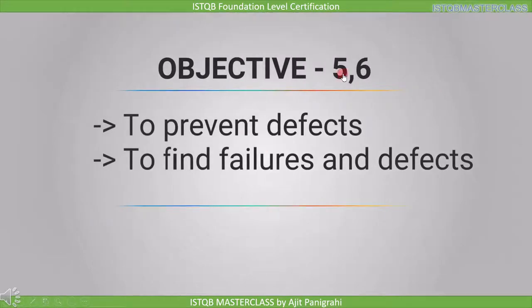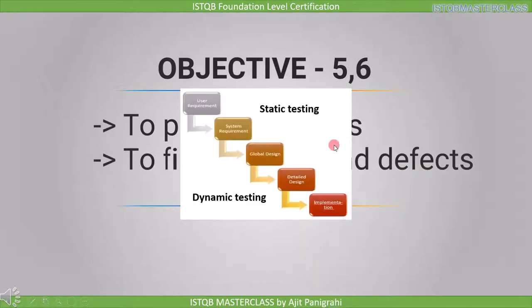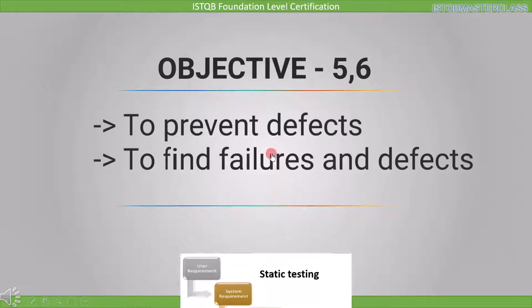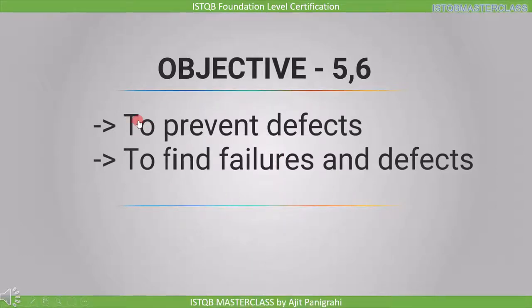Objectives 5 and 6 go together. Objective 5 is to prevent defects, and objective 6 is to find failures and defects. If you find a defect in the requirement stage, you prevent it from going to the next stage. We need to find defects or failures in the same stage in which they are tested; otherwise the defect will travel to the next stage and it will be more costly to fix. This is why preventing defects and finding failures and defects are important objectives of testing.